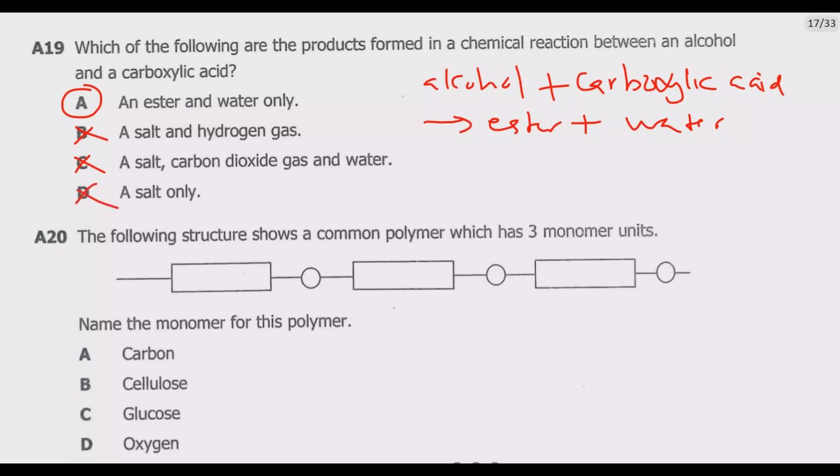Question A20: the following structure shows a common polymer which has three monomer units. Name the monomer for this polymer. So this is what we have. If you notice, this is the repeating unit. From here going backward, then from here going backward.